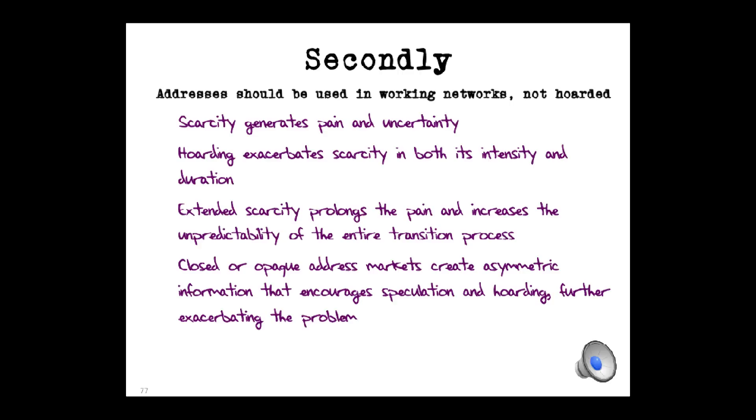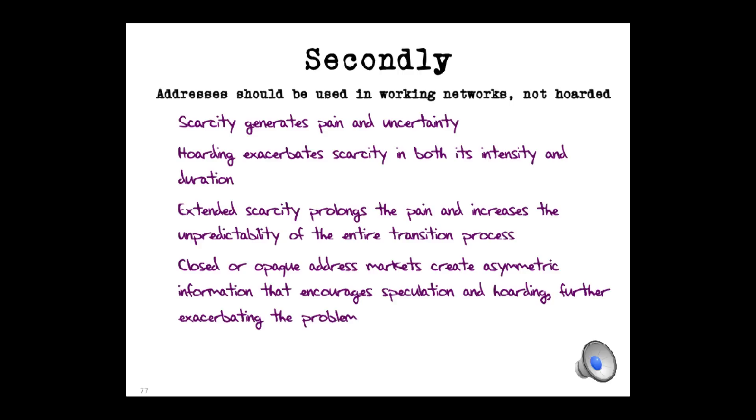And I've also seen a huge amount of work trying to delay this problem. Trying to delay the point at which we actually get into address exhaustion. Bring it on. Because the longer we take in transition, the more we forget about the fact that transition is purely temporary. The more we forget about the fact that IPv6 truly is the objective. Because, quite frankly, if we get this wrong, the network won't stop. If we get this wrong, we'll just rebuild that old stifling, vertically bundled carriage monopoly. We will rebuild the old AT&Ts of the past. We will rebuild a network that was only good for just one thing and only one thing. We can do that. We're good at exhaustion.